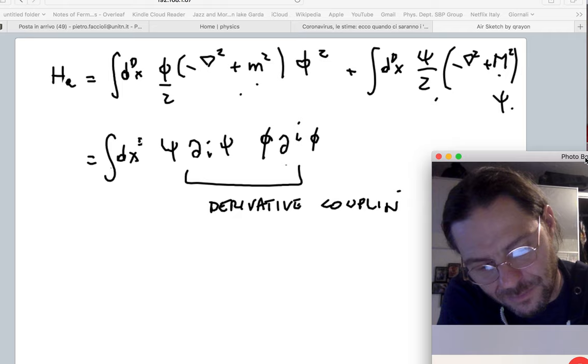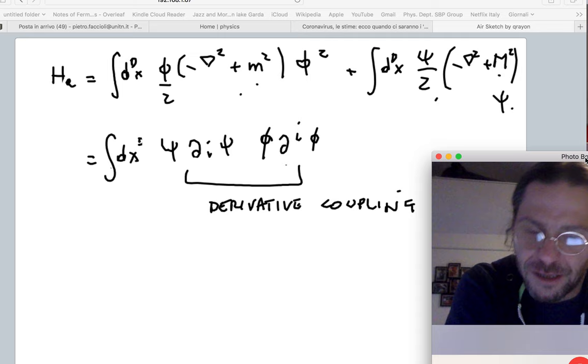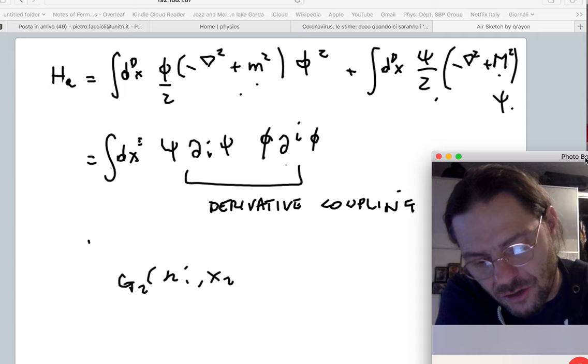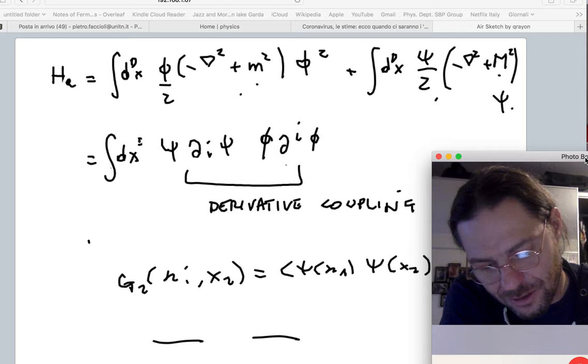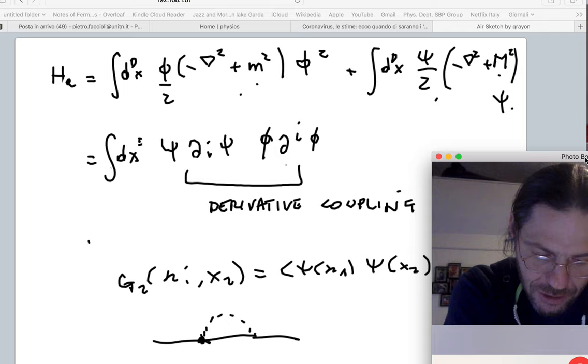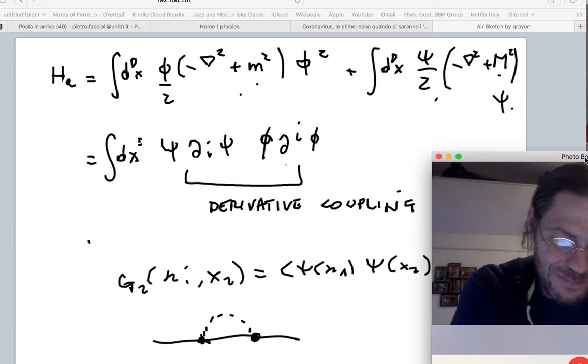Now this is a theory with a derivative coupling. So what are the vertices of this theory? What are the Feynman rules of this theory? And in particular, you might evaluate the two-point correlation function, say just for a change, for the psi field. Now in the full theory, not in the free correlation functions. And again, you'll discover that there will be some kind of interaction here which is different from the one, but you don't have the derivatives of course.